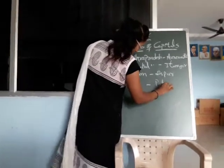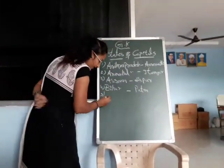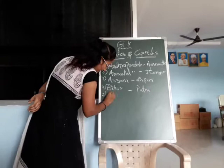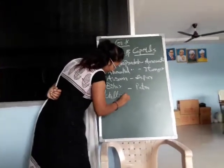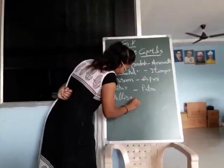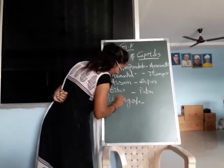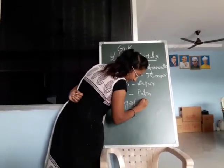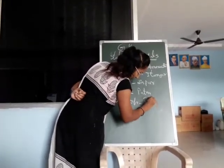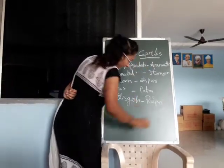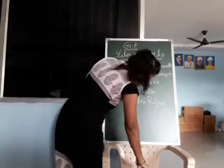Now the fifth one — Chhattisgarh, capital. Chhattisgarh, capital. Raipur. Very good. You are a Valerian, yes. Very good. Keep it up.